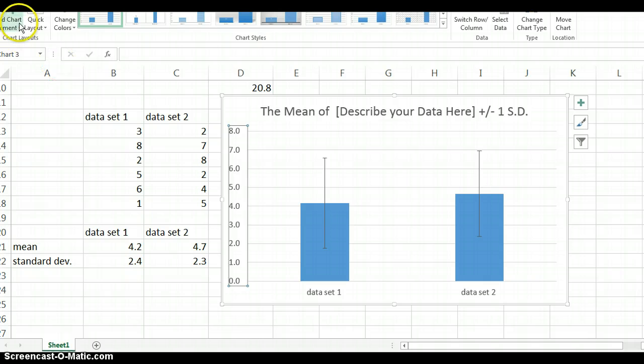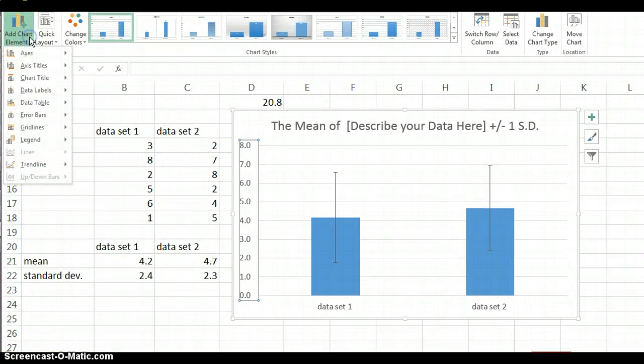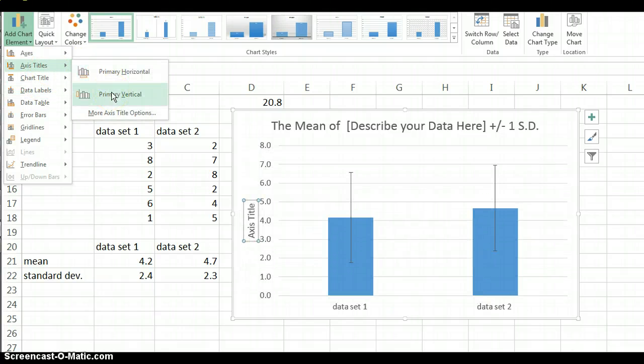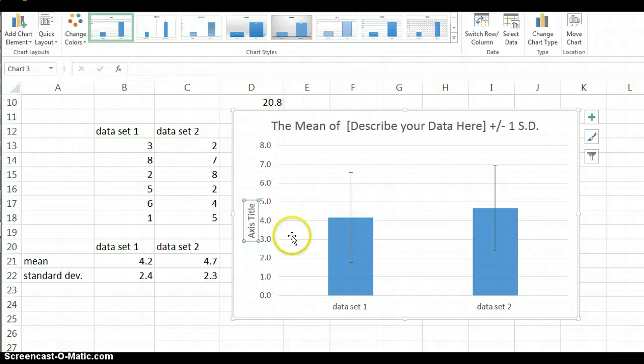So we want to go back up to chart elements. And we want to do axis, titles, primary, vertical, enter. And then when you click in this box, you can type whatever the unit is. I haven't specified a unit in this particular data set, but it could be minutes, it could be pounds, it could be any numerical unit. Okay.